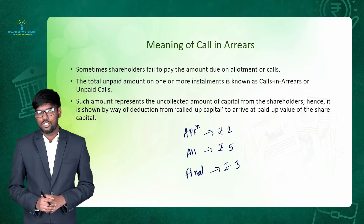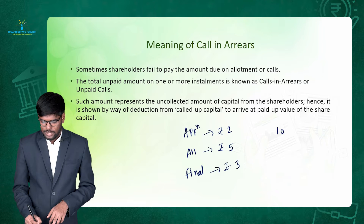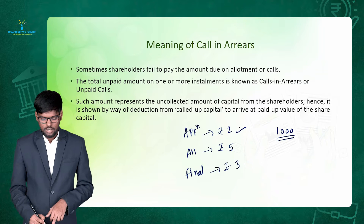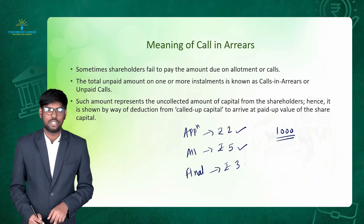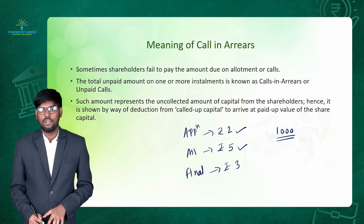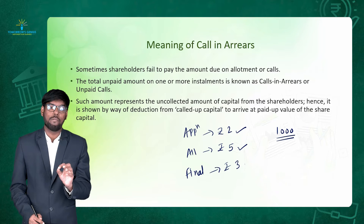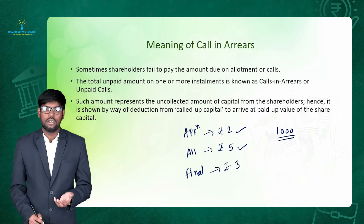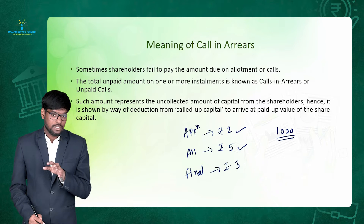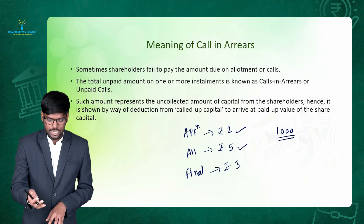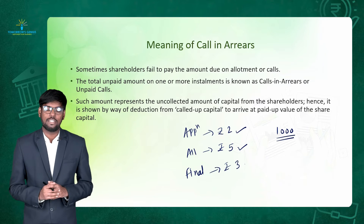Suppose there is one shareholder whose name is Prakash and he is holding 1000 number of shares of the company. He paid rupees 2 at the time of application and rupees 5 at the time of allotment. Now it is time to pay final call money of rupees 3. The company called him to get rupees 3 on the final call, but he was unable to make the payment even after being called several times. In this scenario, when the call money is due but shareholder Prakash is unable to make the payment of the rupees 3 final call money, this case is known as call in arrears.